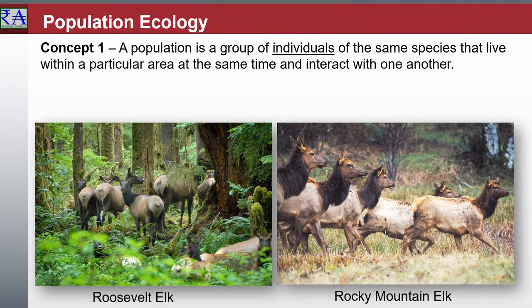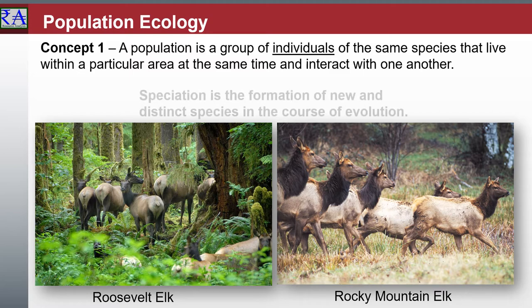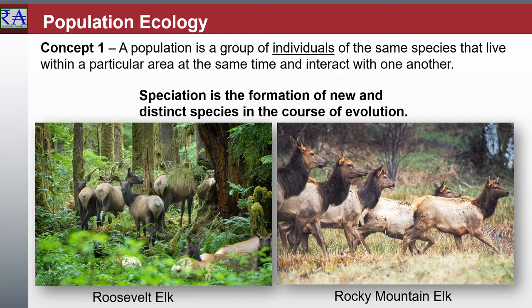Speciation is the evolutionary process by which populations evolve to become distinct species. Charles Darwin was the first to describe the role of natural selection in speciation in his 1859 book, The Origin of the Species.